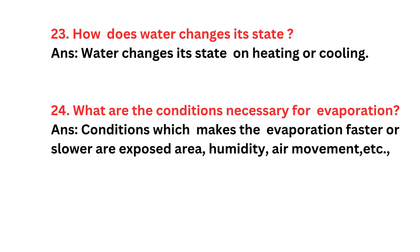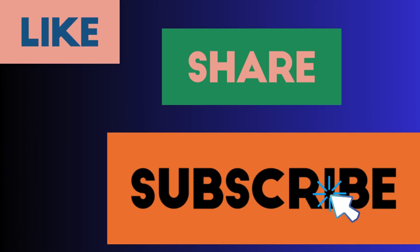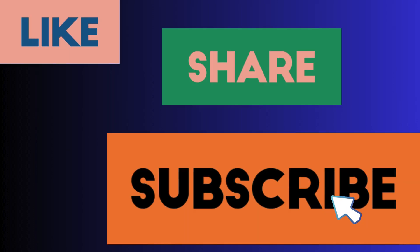Extra Question 23: How does water change its state? Answer: Water changes its state on heating or cooling. Extra Question 24: What are the conditions necessary for evaporation? Answer: Conditions which affect evaporation include exposed surface area, humidity, and air movement. That covers all the questions and answers.